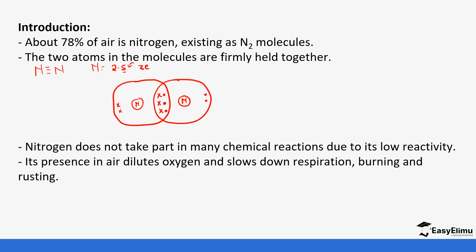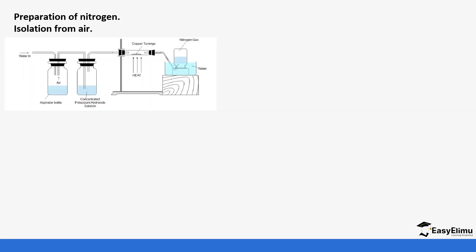The nitrogen molecule has a very strong triple bond which gives it a low reactivity. In the presence of air, dilute oxygen slows down respiration, burning, and rusting — so nitrogen is the one that slows down these reactions. When we come to the preparation of nitrogen, we said we can isolate it from air.